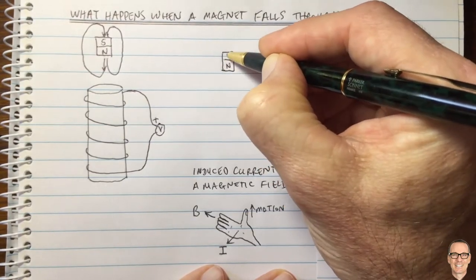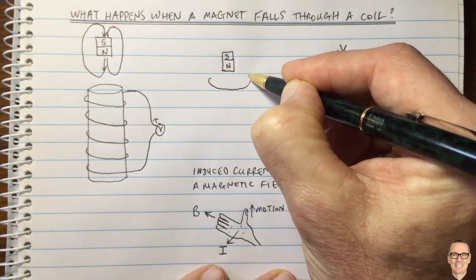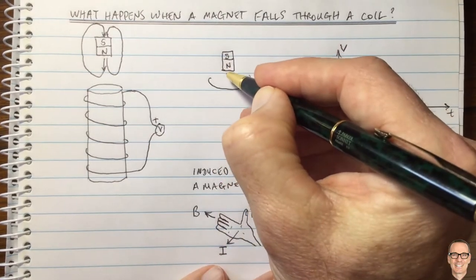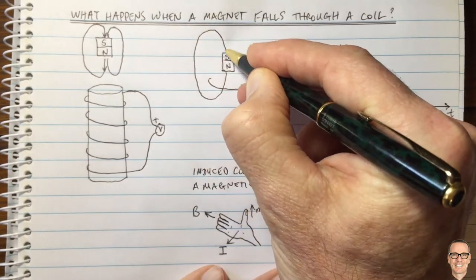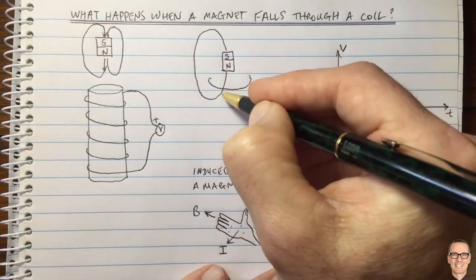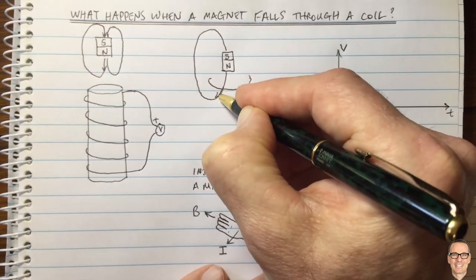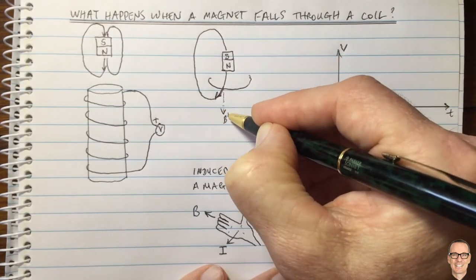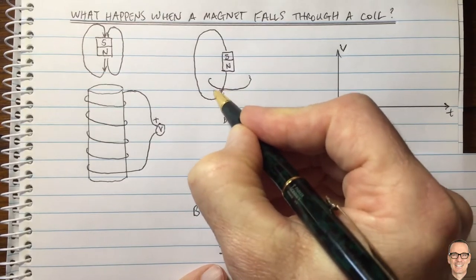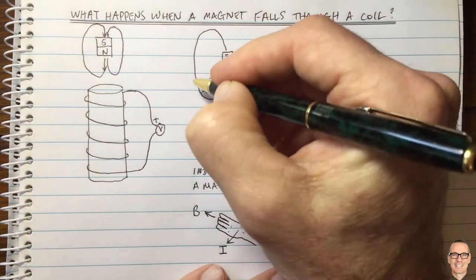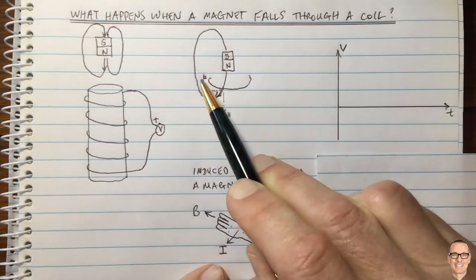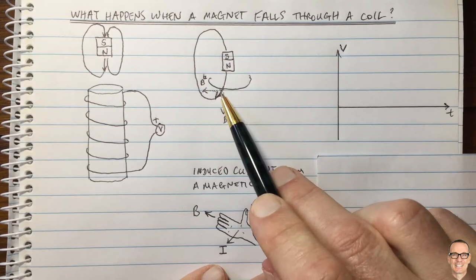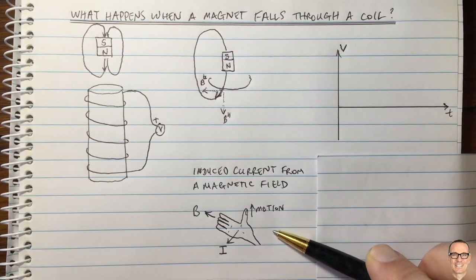I'm going to draw the magnet and only draw one wire at the top of the coil — just one loop of wire. From the magnet there is a magnetic field coming down and around, and on that particular part of the coil the magnetic field is acting at an angle. There is a component parallel to the direction of motion, which I'll call the parallel component, and a component perpendicular to that, which I'll call B perpendicular.